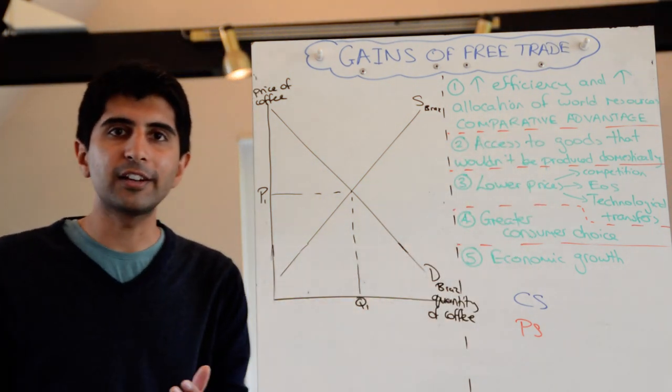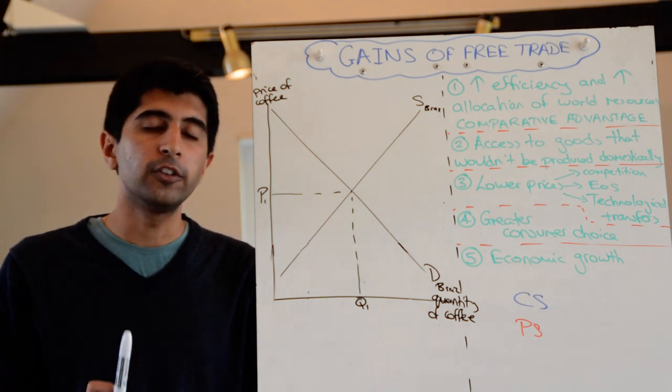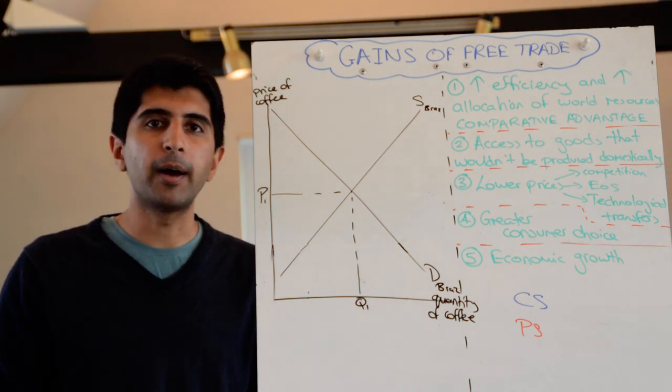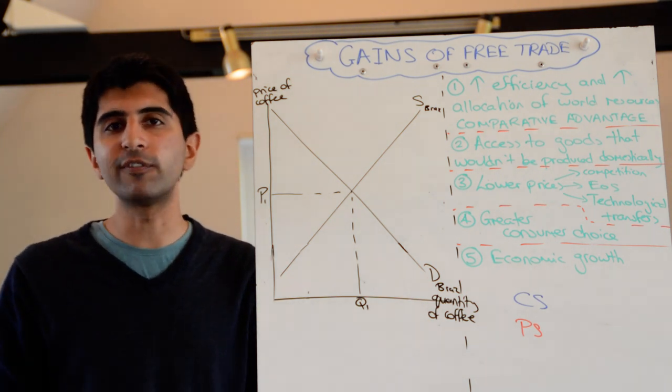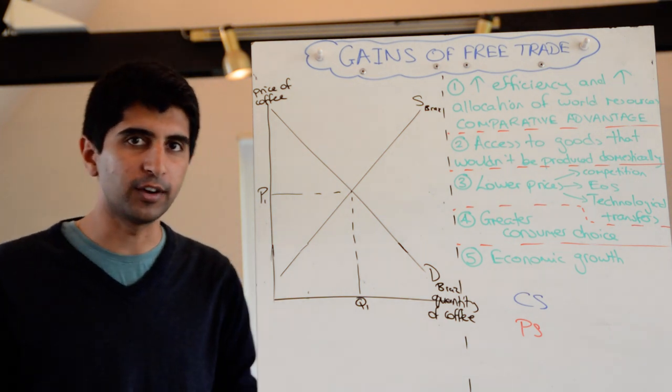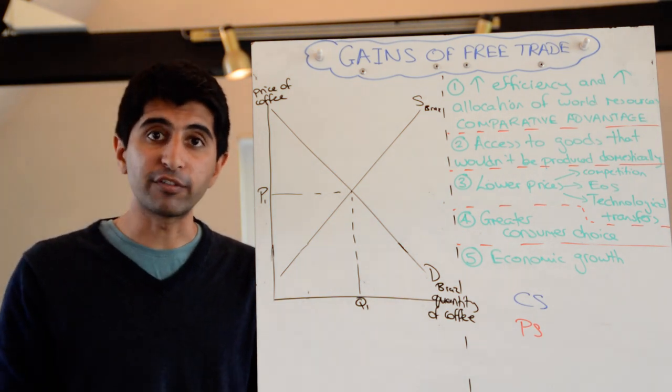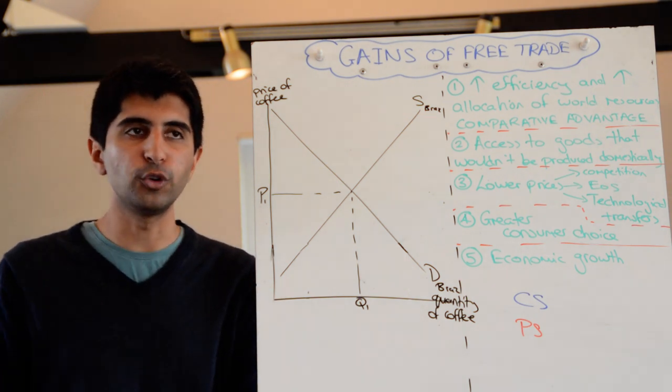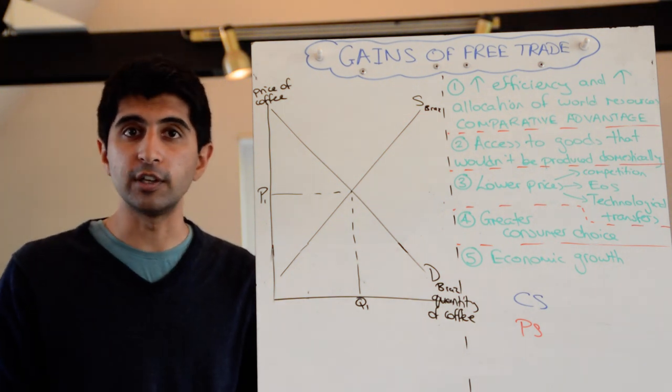Second, countries can actually gain access to goods and services that they couldn't have produced in their own economy. So without free trade, the UK, for example, would not be able to supply the market for bananas. We can't produce bananas in the UK at all. We just don't have the climate. But of course with free trade we can import bananas and satisfy the demand that is out there for bananas in this country. So access for goods and services that wouldn't have been available without free trade suddenly become available. That's good for consumers. It's also good for producers, for businesses who can access raw materials from countries and from markets which would have been closed without free trade.